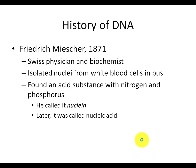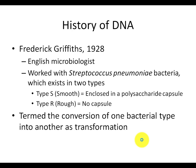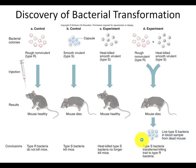In 1871, Friedrich Meischer, a Swiss physician and biochemist, was working with patients who were sick. He collected snot and pus from patients, isolated white blood cells from the pus, isolated nuclei, and finally purified a substance he called nuclein. This substance was rich in nitrogen and phosphorus. Later, this substance became known as nucleic acid — which, as we said, includes DNA and RNA.